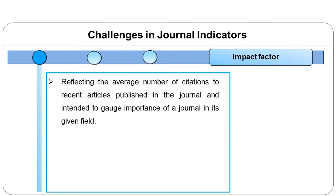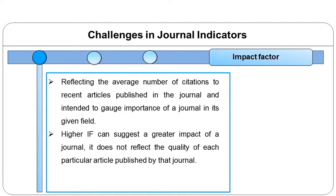The impact factor does have several limitations. Although a higher impact factor can suggest a greater impact of a journal, it does not reflect the quality of each particular article published by that journal. Consequently, it is not clear whether a high impact factor is due to a moderate degree of citations of all articles published or to a high degree of citations of only some articles. In order to address the limitations of the journal impact factor, a normalized journal impact factor has been developed.